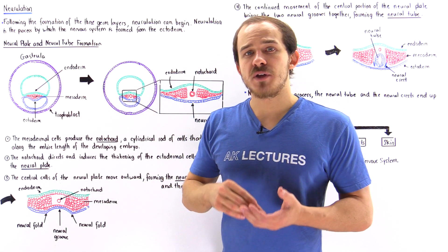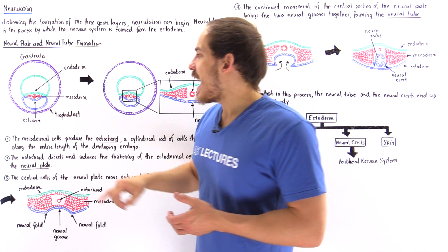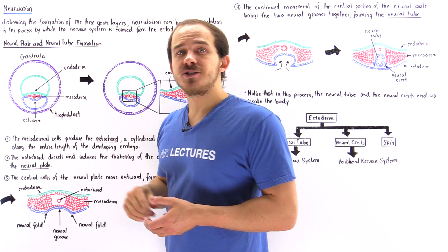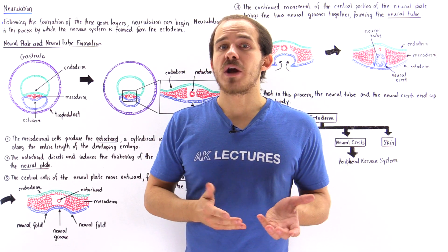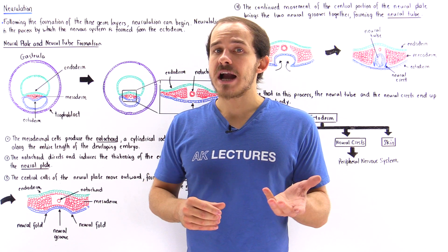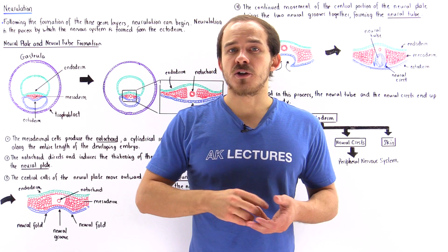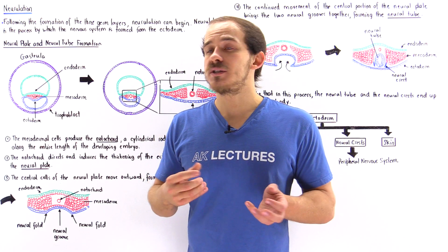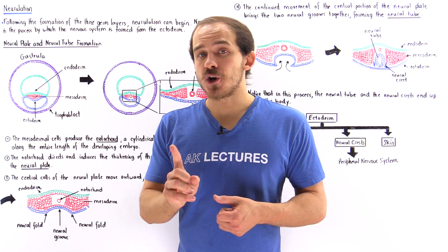These are the three different germ layers. We have the green cells that make up the endoderm, the red cells that make up the mesoderm, and the blue cells that make up our ectoderm. The endoderm is the germ layer that eventually forms the epithelial layer of our digestive tract as well as the lungs, liver, pancreas, and other structures such as the thyroid, parathyroid glands, and the thymus. The mesoderm forms the muscular and skeletal system, the cardiovascular system, the excretory system, and the reproductive system, while the ectoderm forms the skin as well as the nervous system.